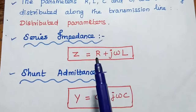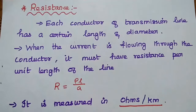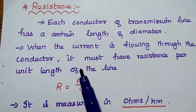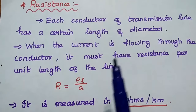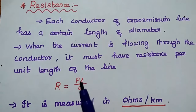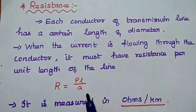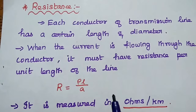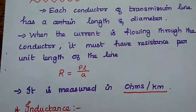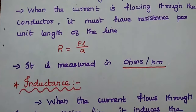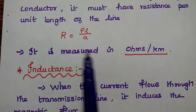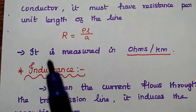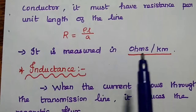Let's see each transmission line parameter in detail. The transmission line is made up of conductors, and each conductor has a certain length and diameter. When current flows through the conductor, it experiences some resistance per unit length of the line. The effect of opposing the current flow is called resistance. Resistance is denoted as R, equal to rho-L by A, depending on the length and diameter of the conductor. It is measured in terms of ohms per kilometer.